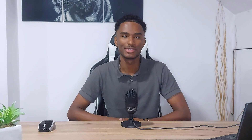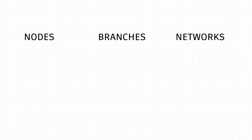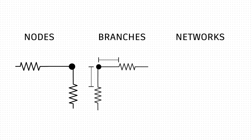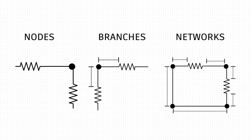Let's first briefly review some information. A circuit has nodes, branches, and networks. A node is any point in a circuit where components are connected together. The branches are the representation of a component's extremities. Branches are connected in nodes, and networks are basically a closed path in a circuit when current can flow. A network has nodes and also has branches.